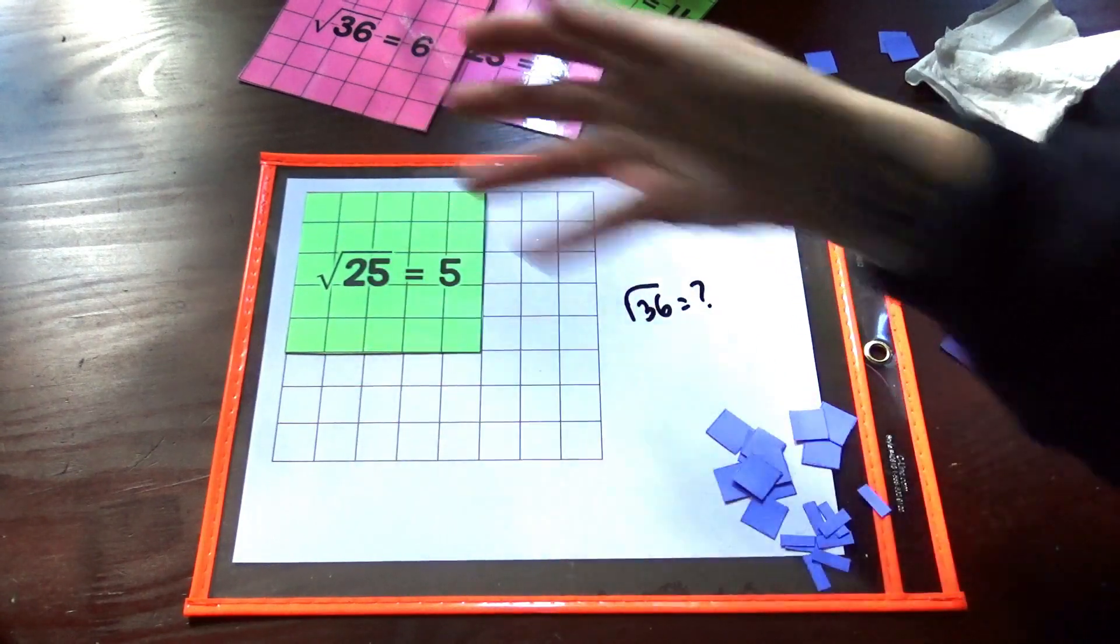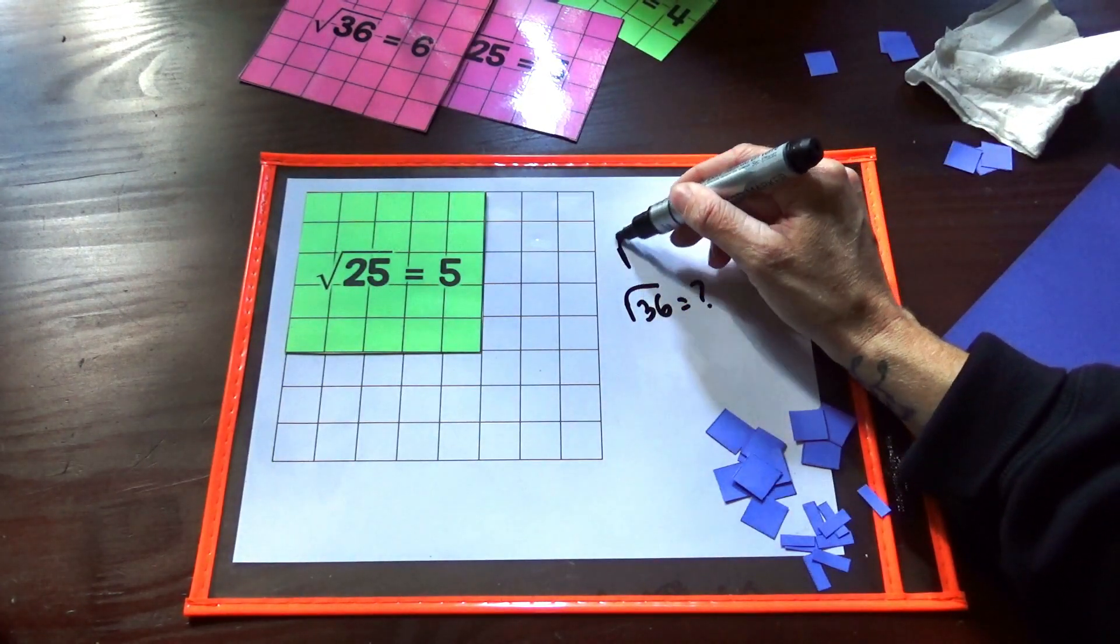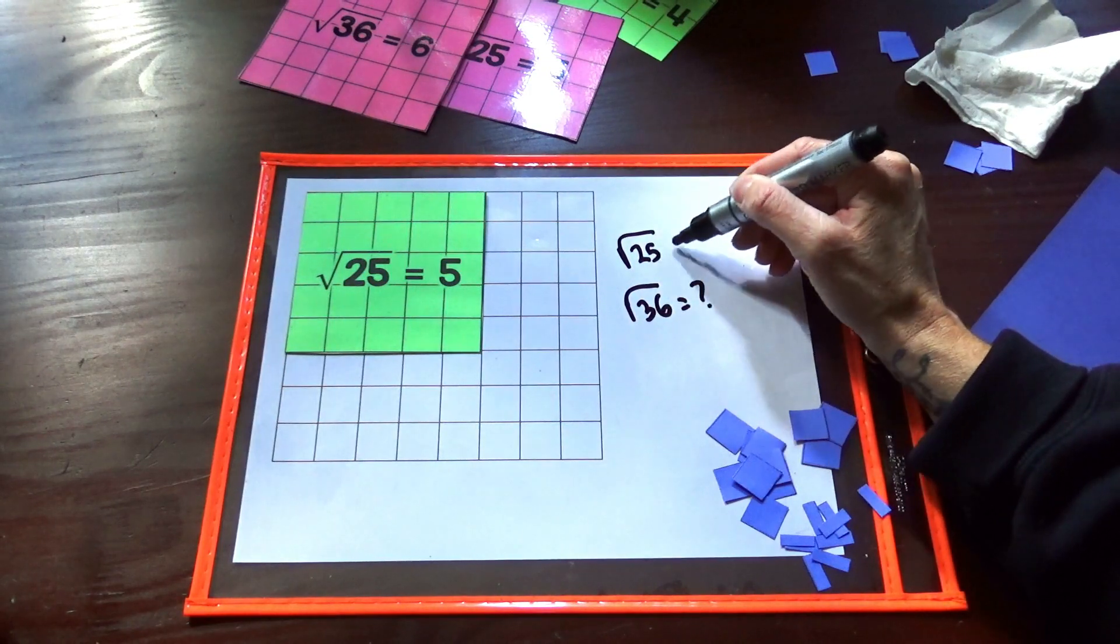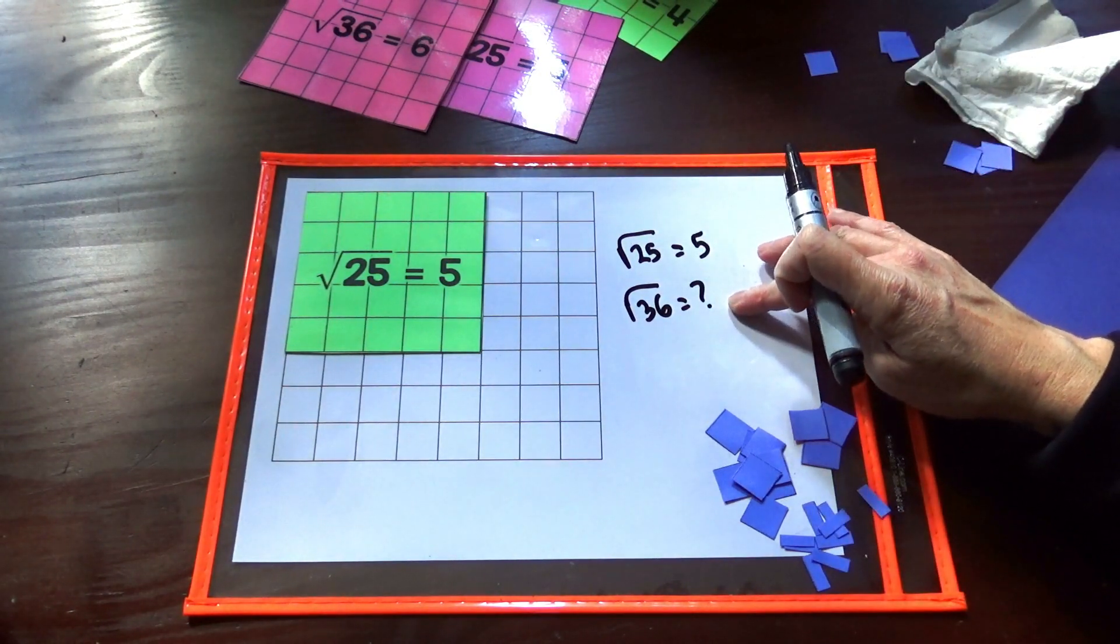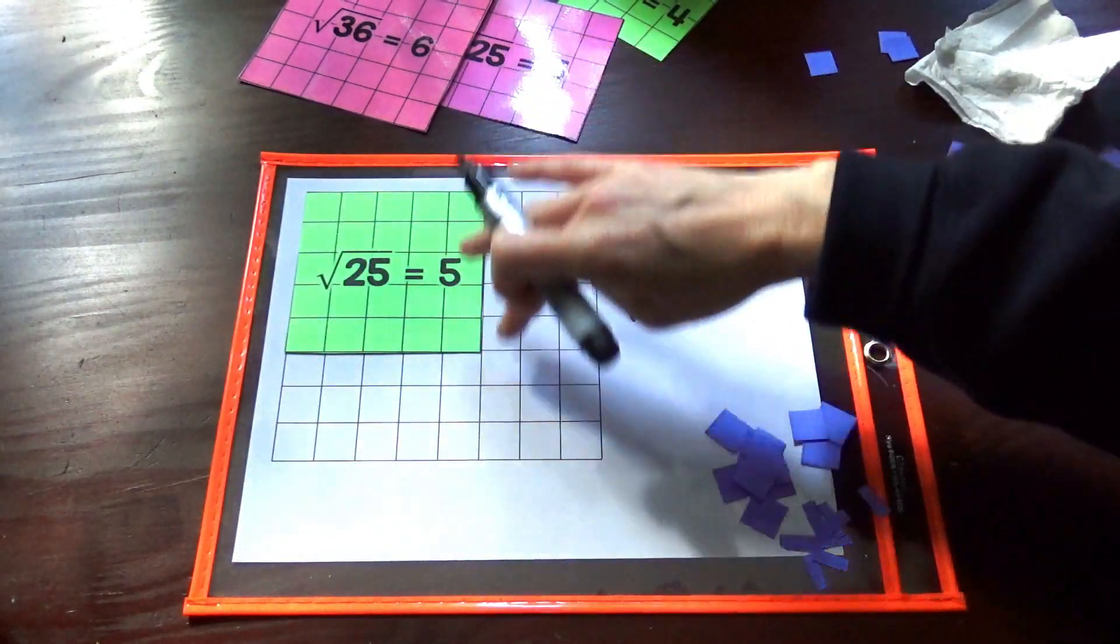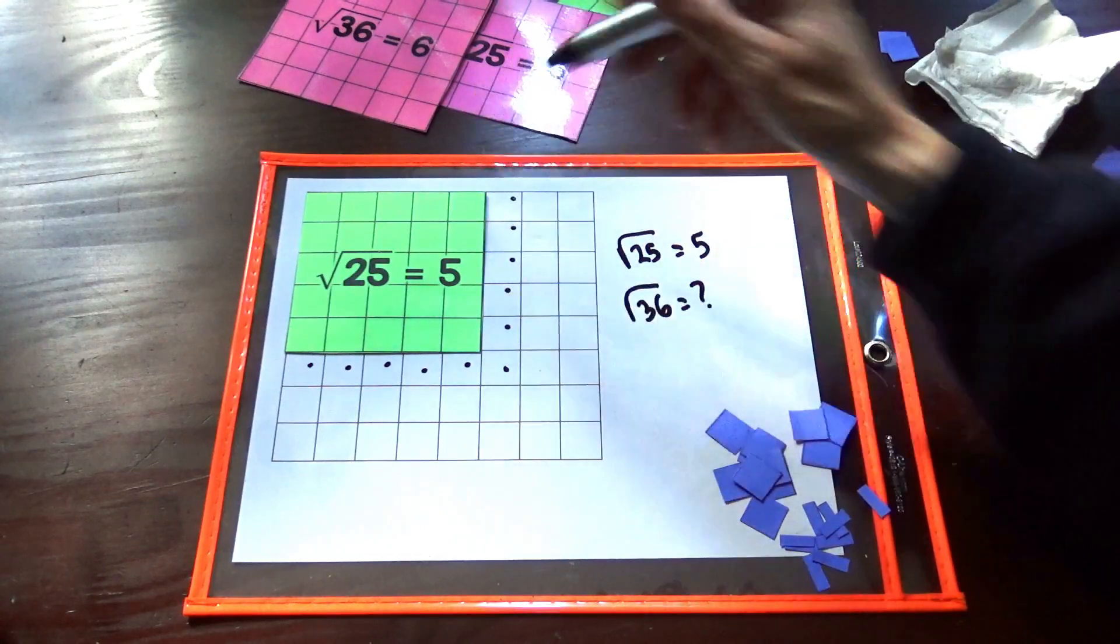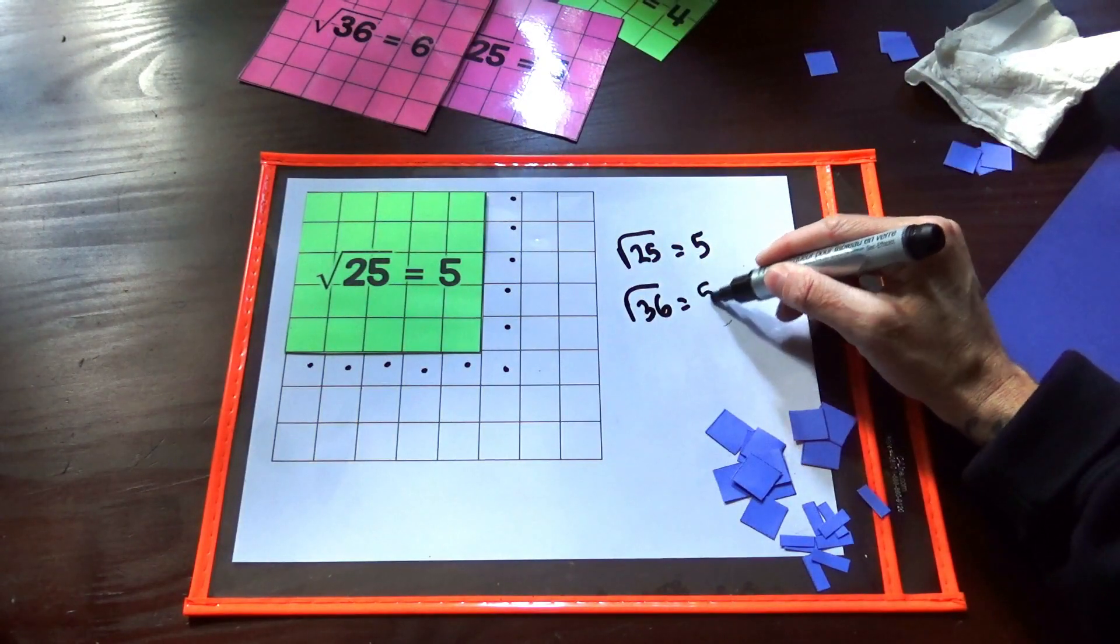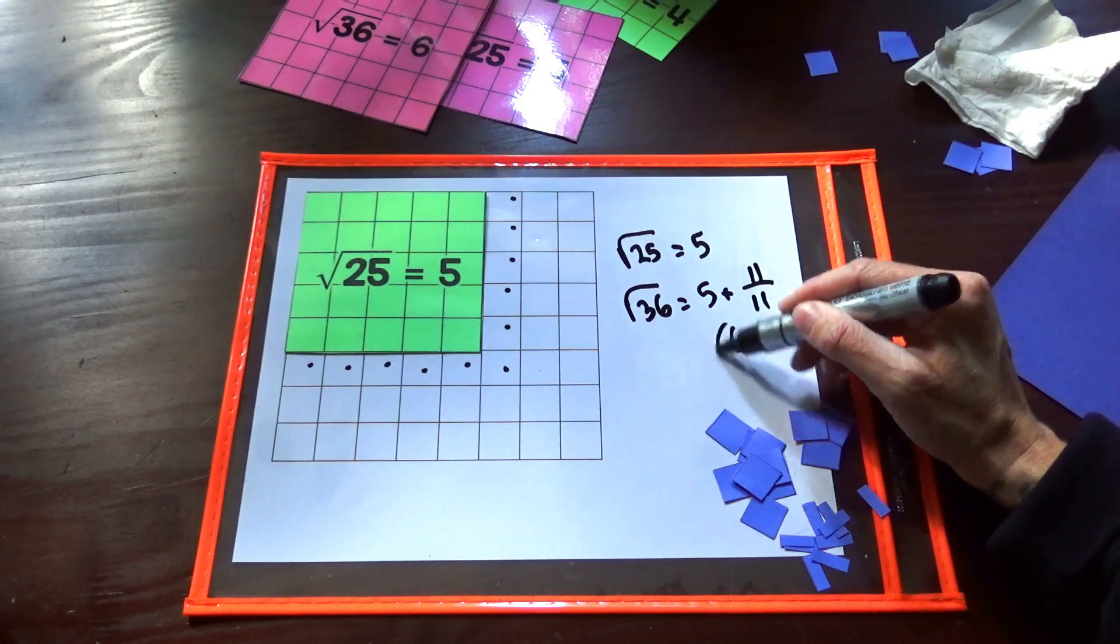Let's say that you know what the square root of 25 is but you don't know what the square root of 36 is. We just forgot it. So we know that the square root of 25 is 5 and to get to 36 we would need to fill in all 11 of these spaces. 26, 27, 28, 29, 30, 31, 32, 33, 34, 35, 36. So 36 is 5 and 11 of those 11 spaces filled in, or 6.